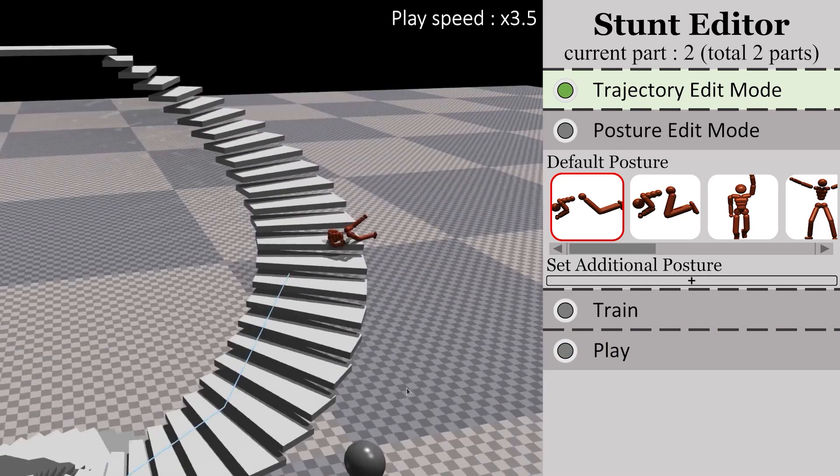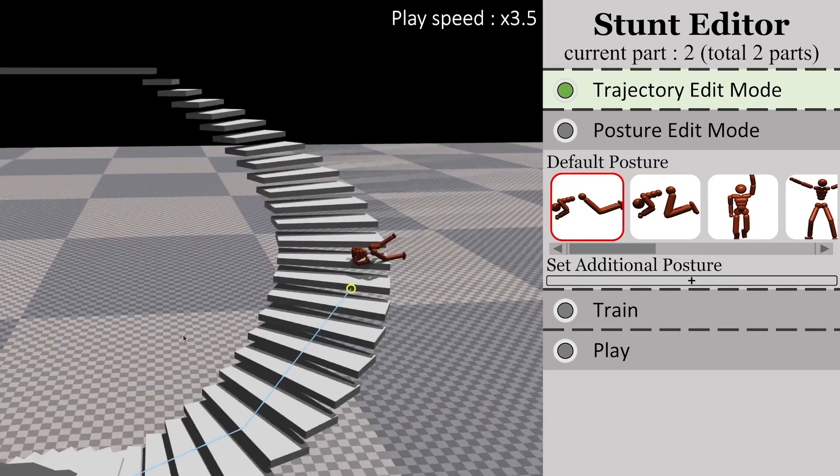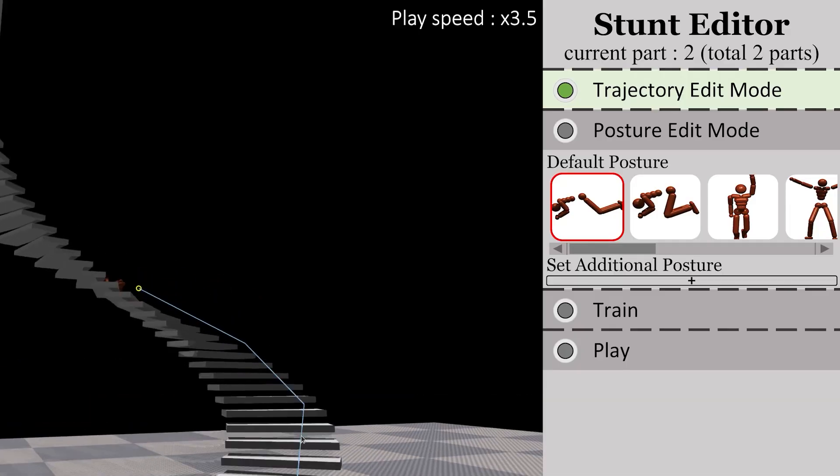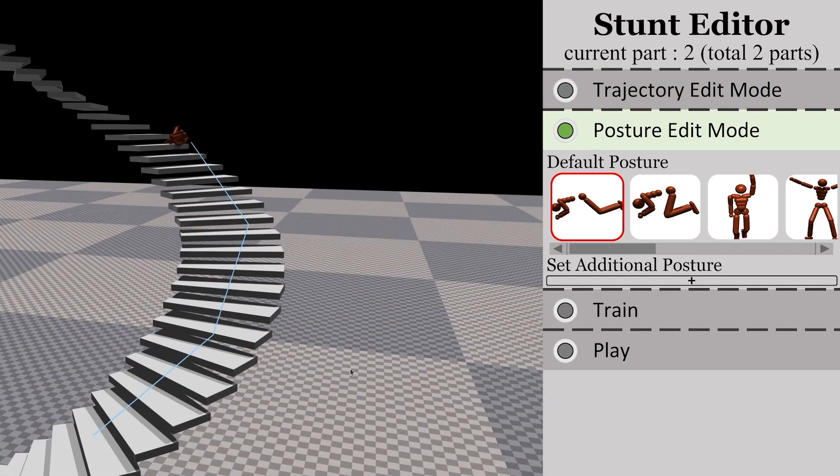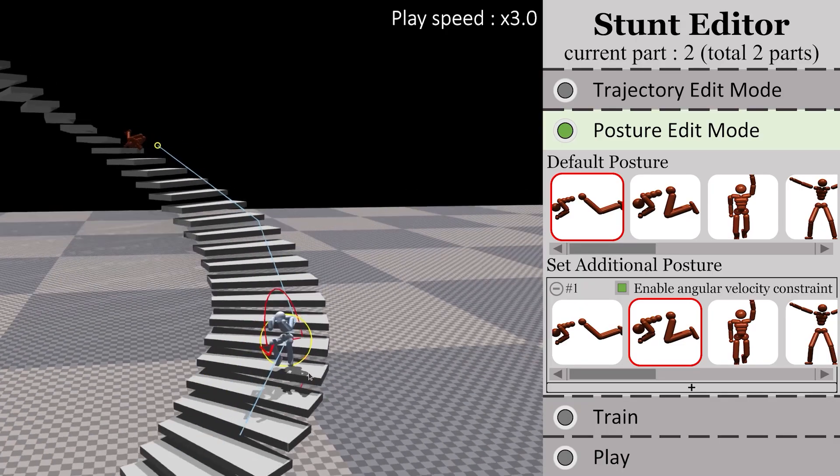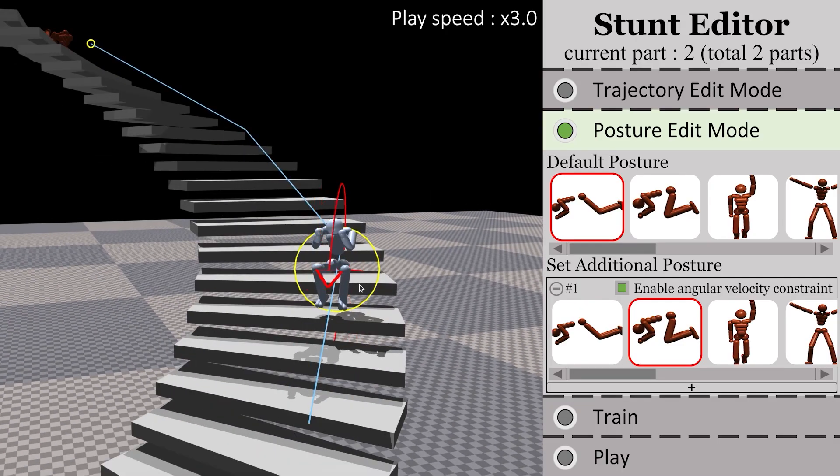For the second part, we will continue editing the latter half of the action. We edit the trajectory to match the desired stunt action. At the end of the trajectory, we decide that it would be better for the stunt actor to adopt a more crouched posture. We place a white guide character at the point where the posture will change, and we adjust its orientation and angular velocity.